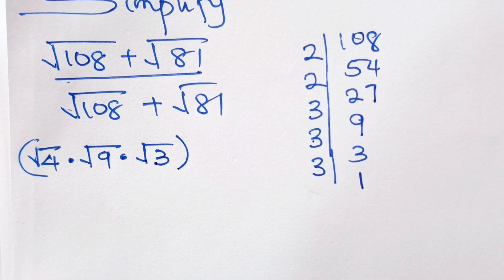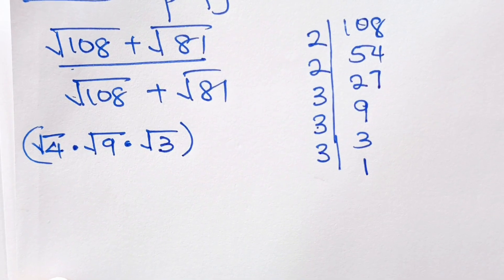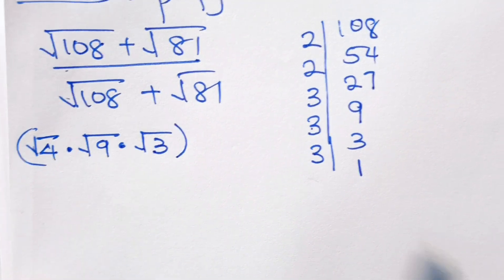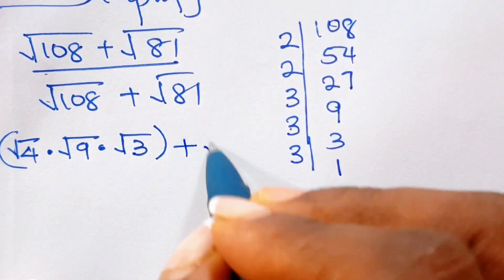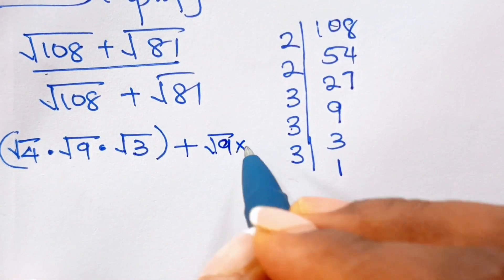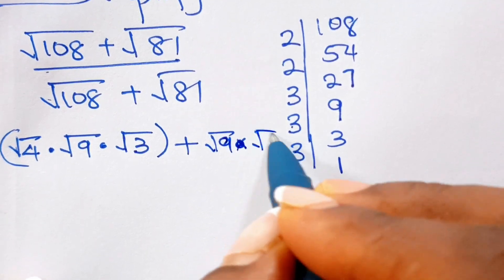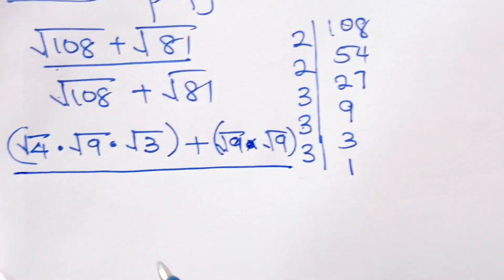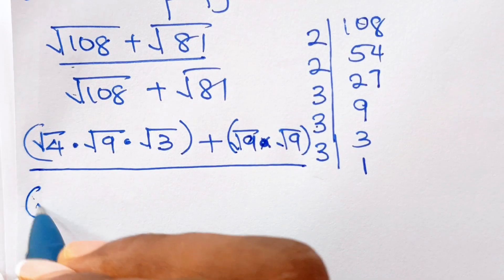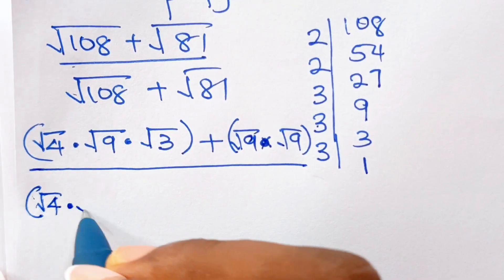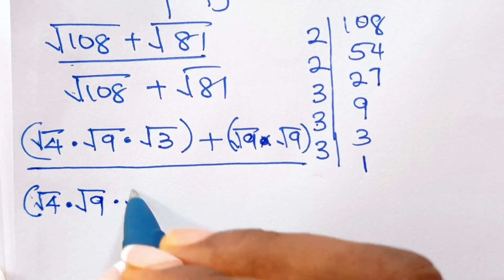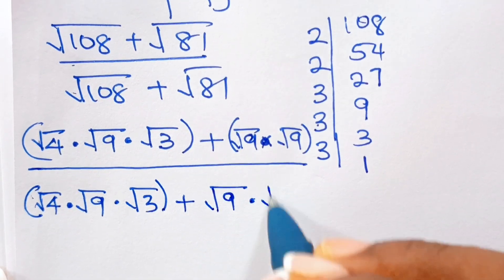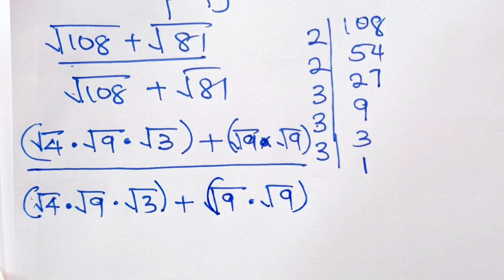Now let's try to factorize root 81. Well, that is easy. Root 81 — we all know that 9 times 9 is 81, so it's going to give us root 9 times root 9. So this is what we are going to have: square root of 4 multiplied by square root of 9 multiplied by square root of 3, plus square root of 9 multiplied by square root of 9.